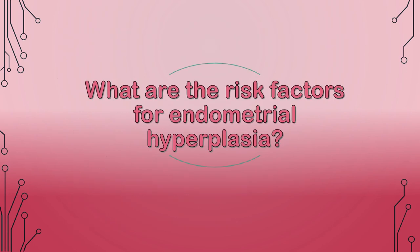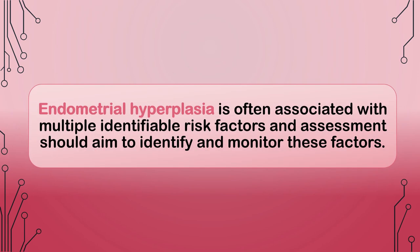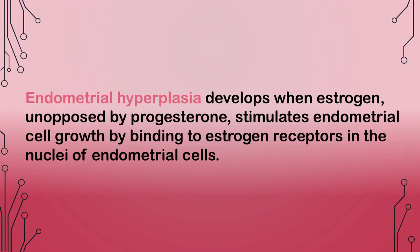What are the risk factors for endometrial hyperplasia? Endometrial hyperplasia is often associated with multiple identifiable risk factors and assessment should aim to identify and monitor these factors. Endometrial hyperplasia develops when estrogen, unopposed by progesterone, stimulates endometrial cell growth by binding to estrogen receptors in the nuclei of endometrial cells.